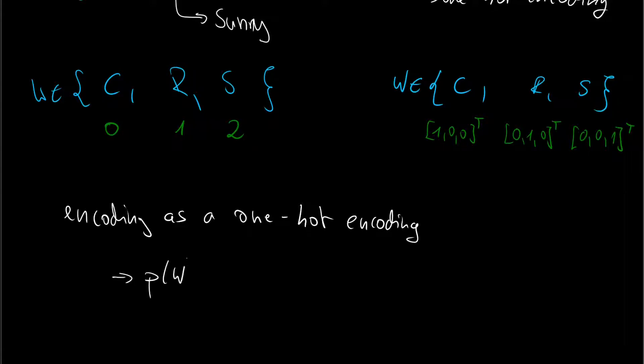So far we've been talking about a p of w where w is an integer, but this is no longer true. Now we have a p of a w vector. So here what we have is a random variable as a vector because we use this one-hot encoding.